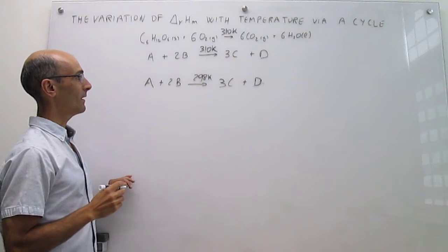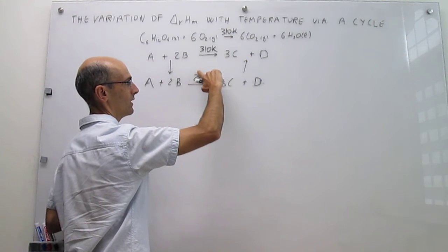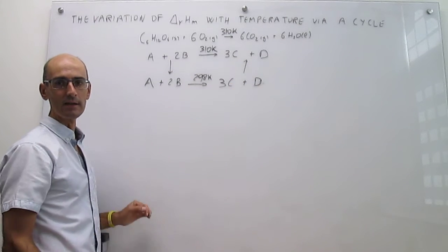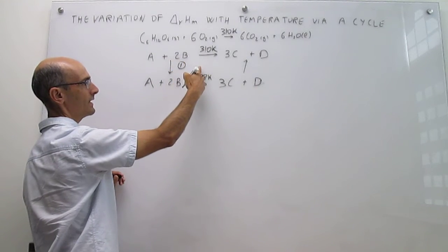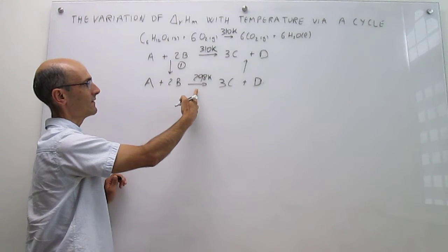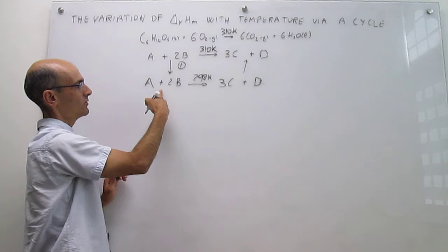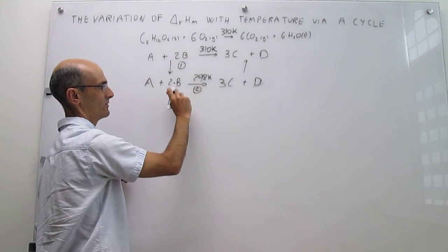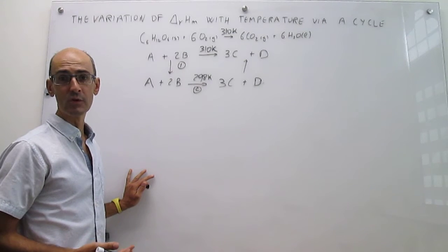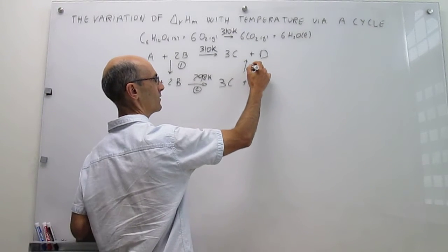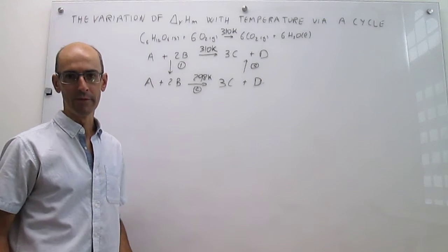The only problem is that we need to connect reagents and products through this pathway. You can clearly see that we're going to have to calculate the enthalpy of three steps. Step one simply cools reagents from 310 to 298 Kelvin — you're just cooling A plus 2B from 310 to 298 Kelvin. The second step is the reaction at 298 Kelvin. The third step is heating the products 3C plus D from 298 to 310 Kelvin.